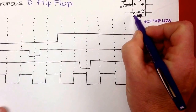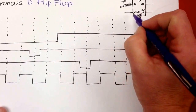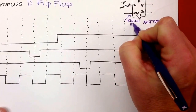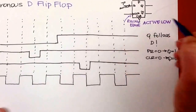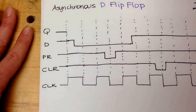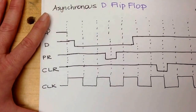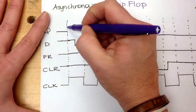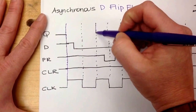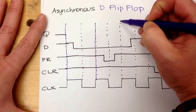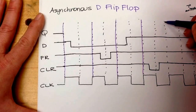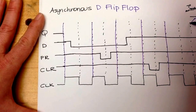There's no bubble on the clock, so it means it responds to the rising edge. So the first thing I'd want to do on my timing diagram is go ahead and mark all my rising edges, so I know I have to look there. That's a rising edge, this is a rising edge, this one, this one, this one, and this one.